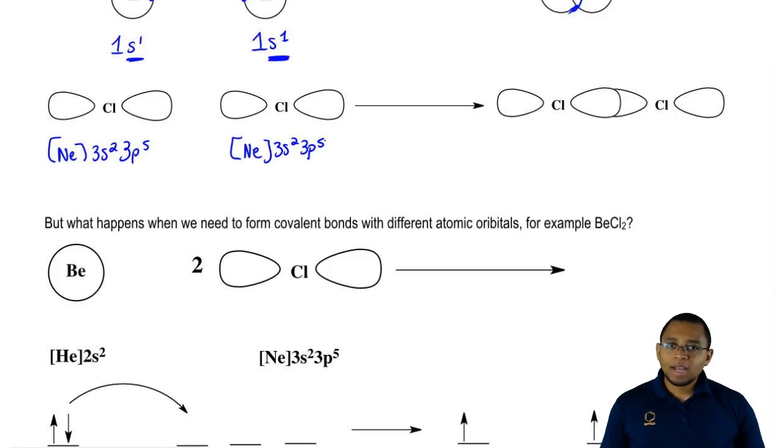Chlorines want to gain one more electron to become just like argon. Where can that electron go? It's going to go to the P orbitals because P can hold up to 6 electrons. There's an electron in here and an electron in here, and they're going to overlap with one another to share those electrons.